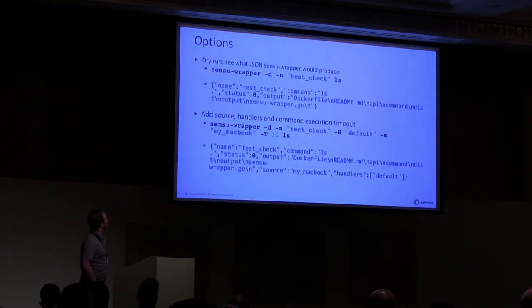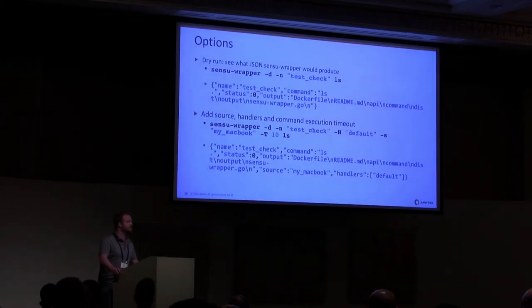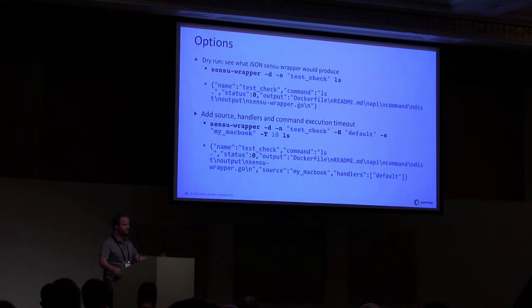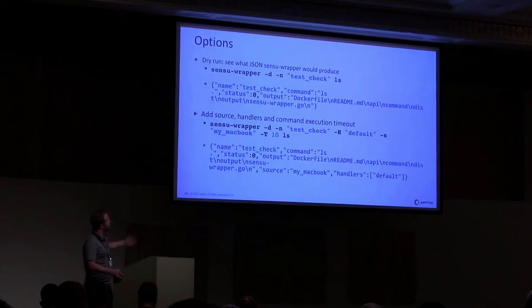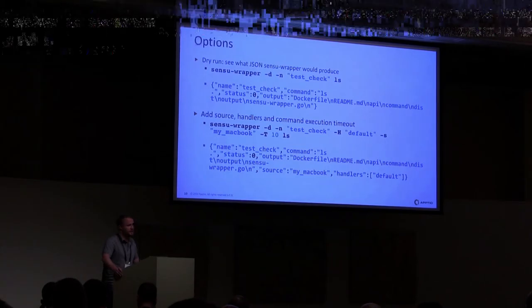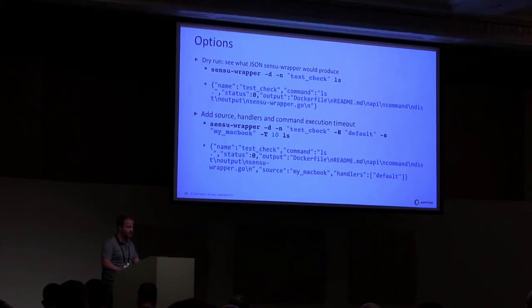Here are some examples. First of all, you can do a dry run to see exactly what JSON will be created. As you can see here, I've named the check that will be created 'test check' and run the ls command, which gives me the output of whatever's in that directory. You can obviously add handlers — in this case I've added the default handler — and I've called the source 'my MacBook', and it just appends that to the JSON. When it creates the Sensu event, it works really easily.